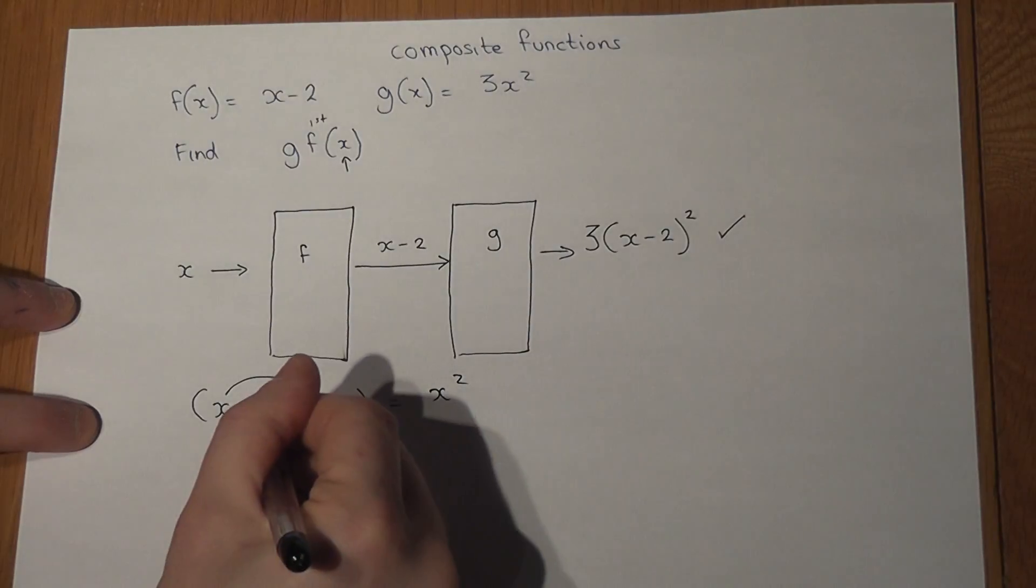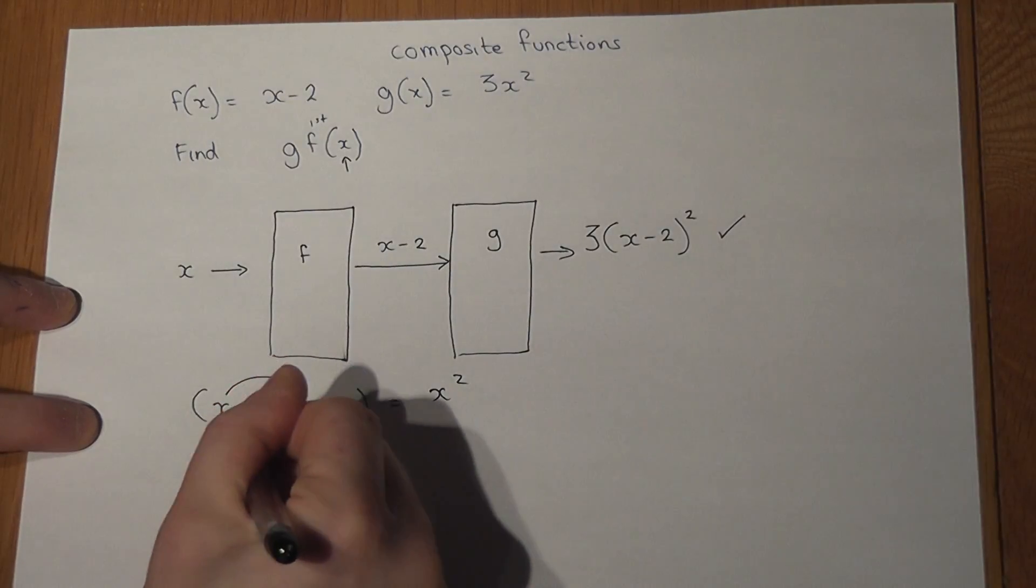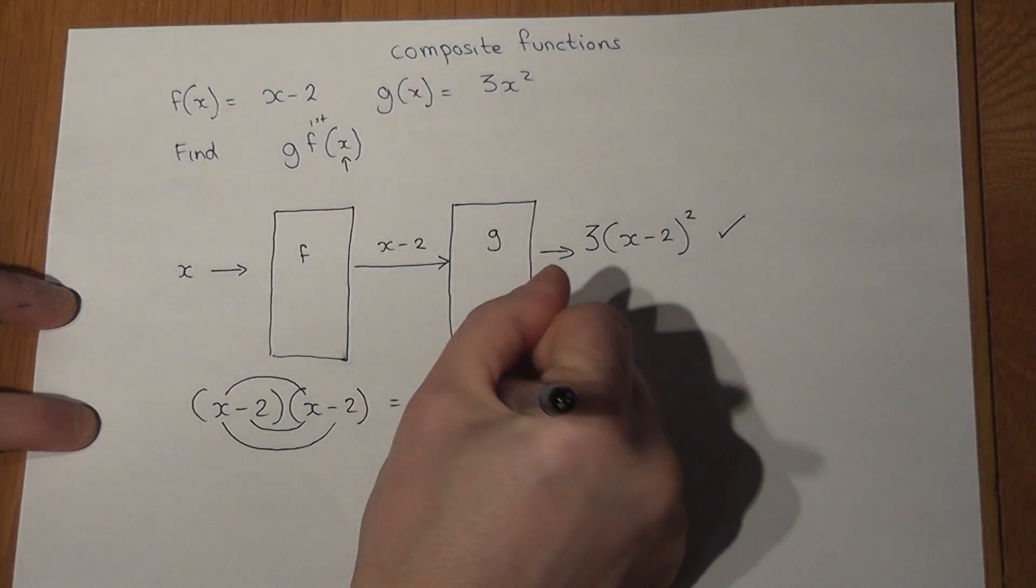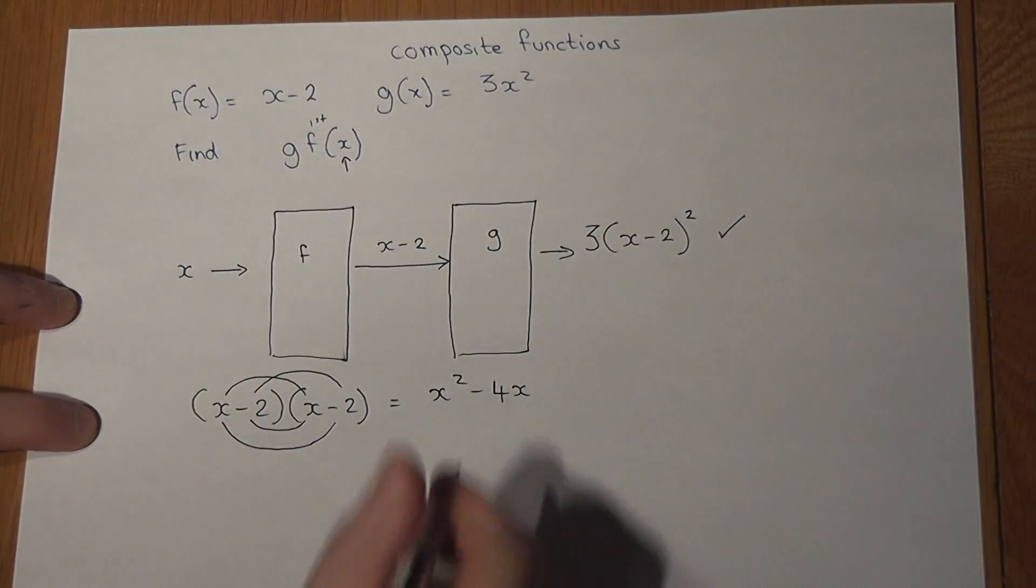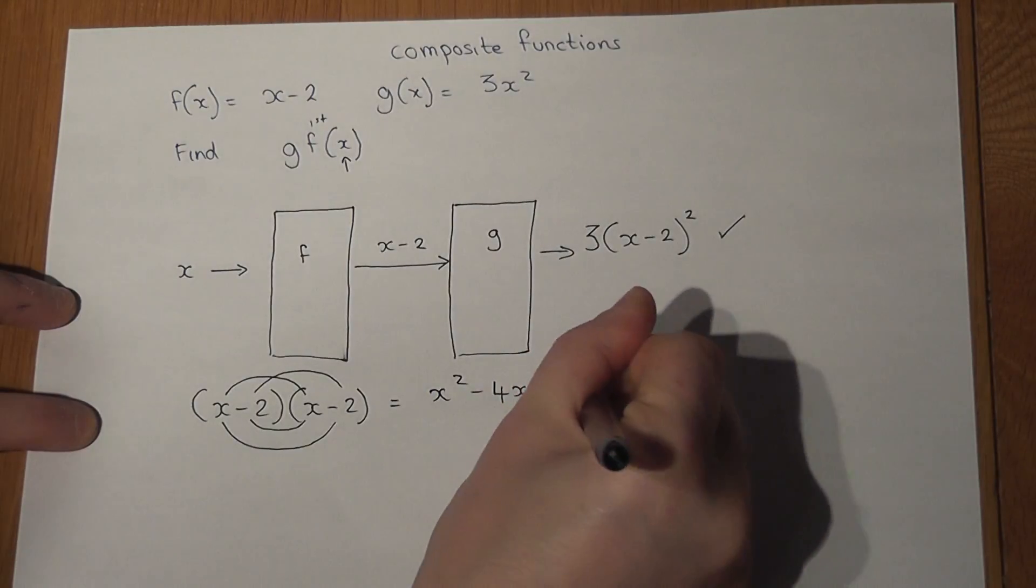we get a minus 2x and another minus 2x which is minus 4x, and then minus two times minus two goes to positive four.